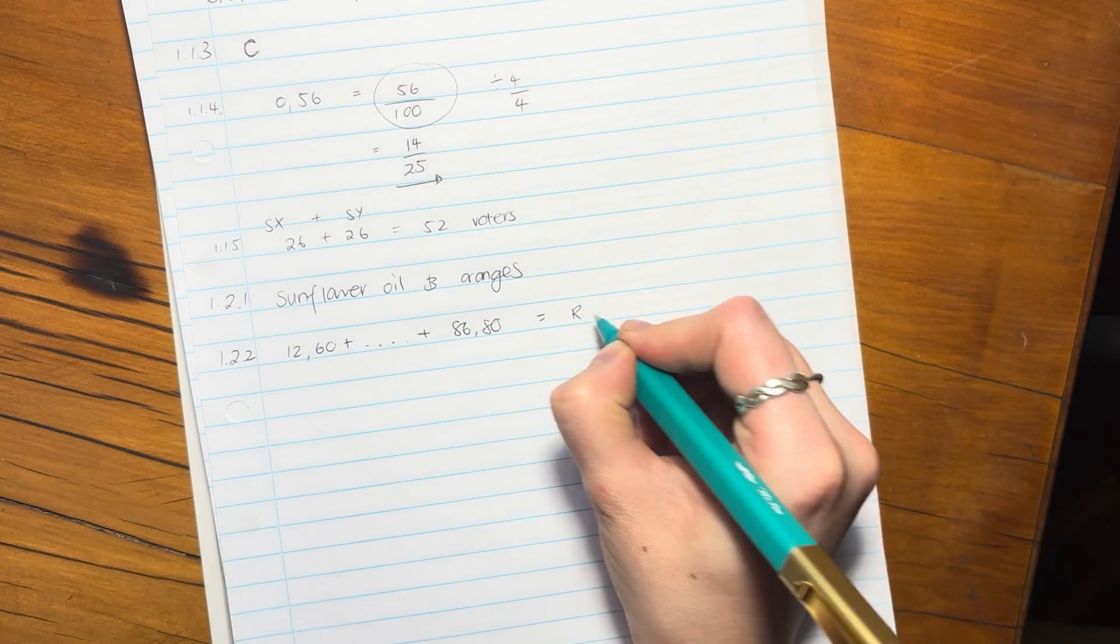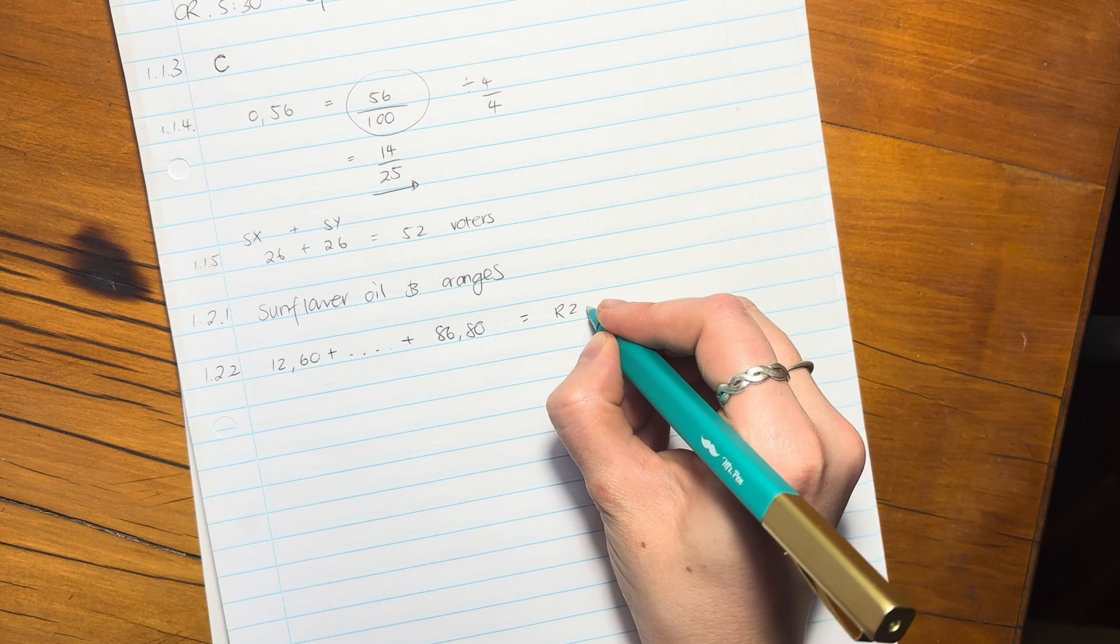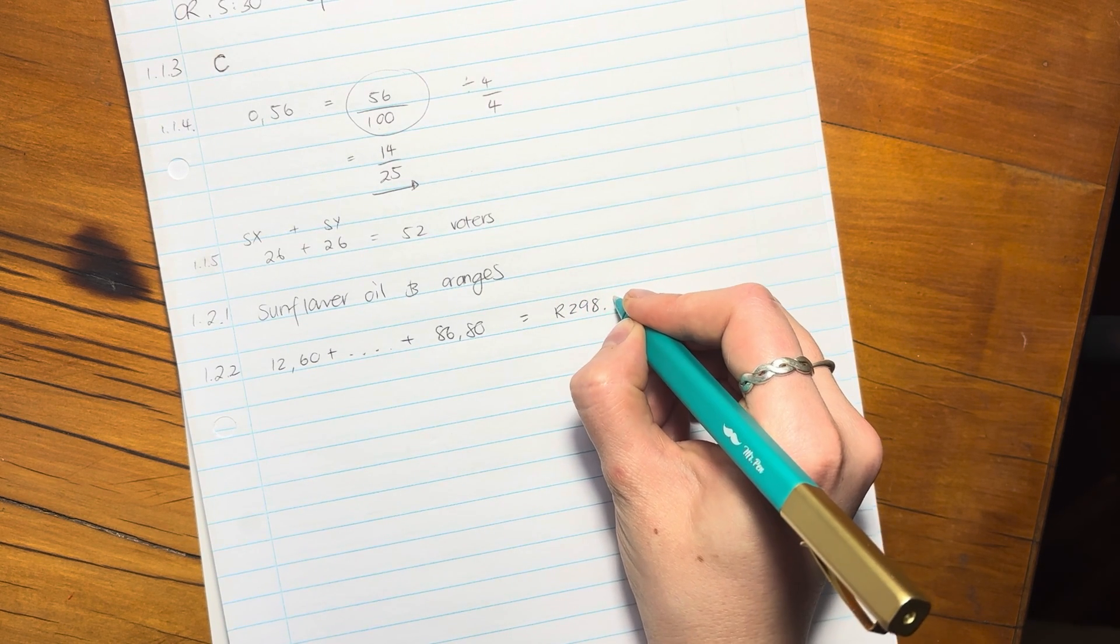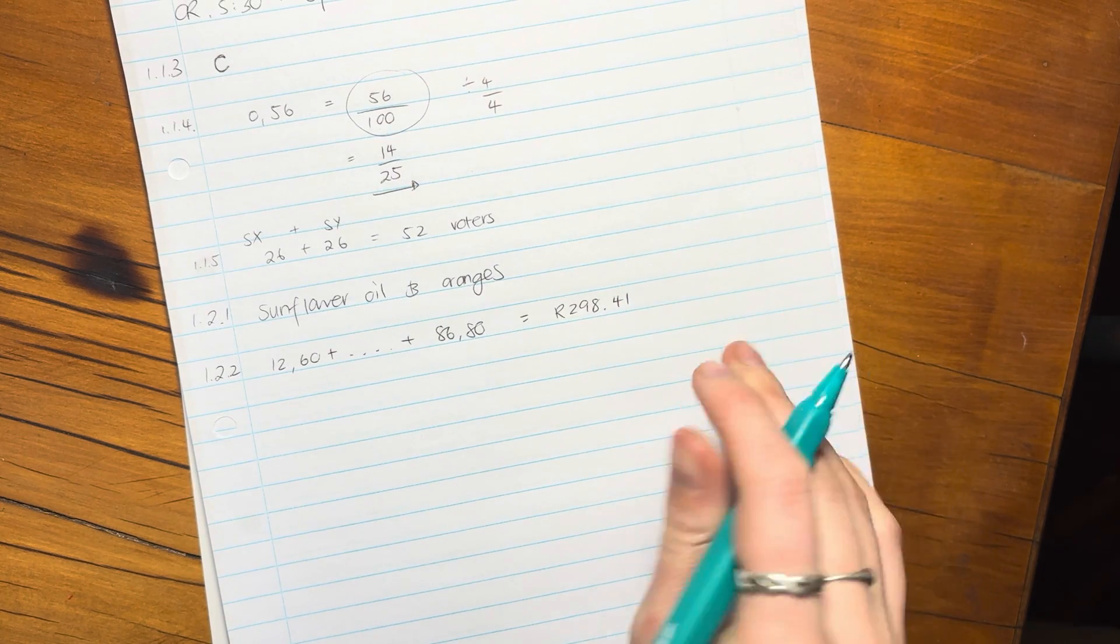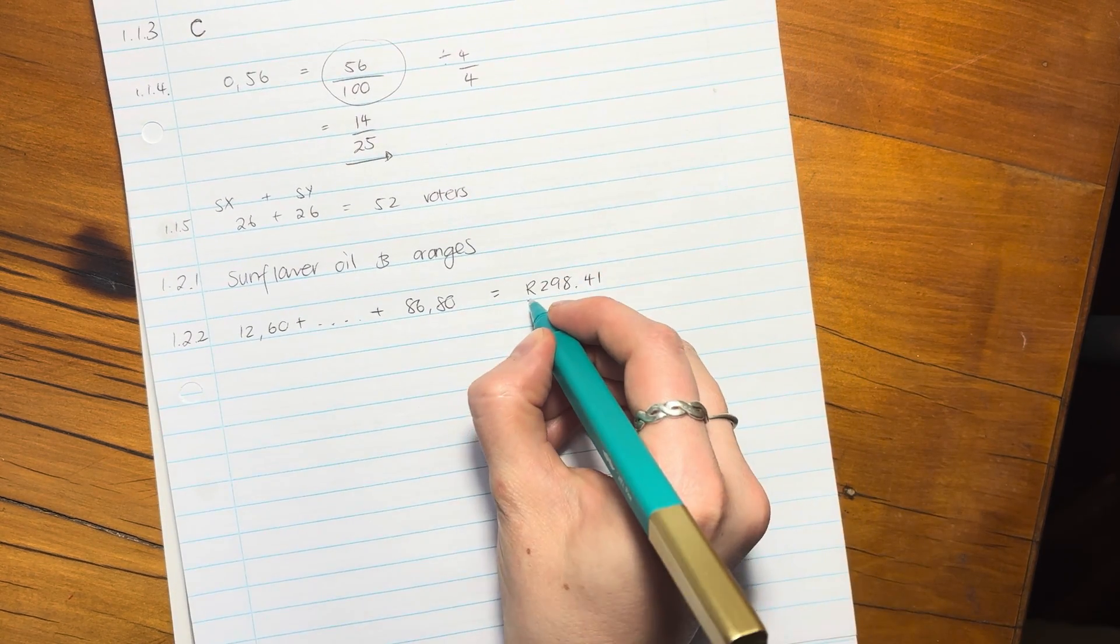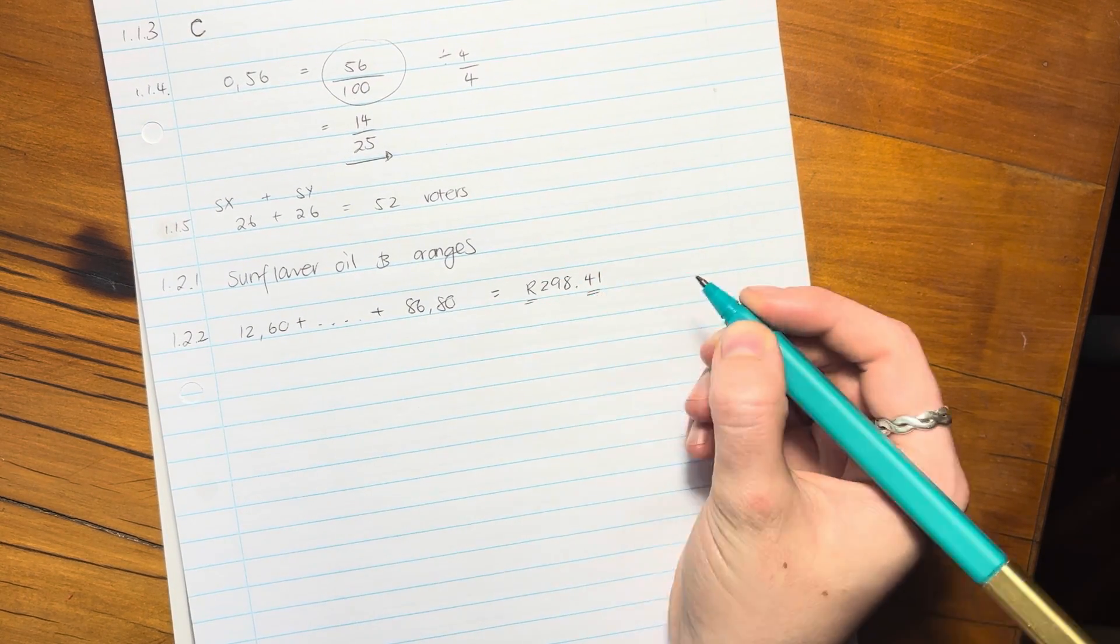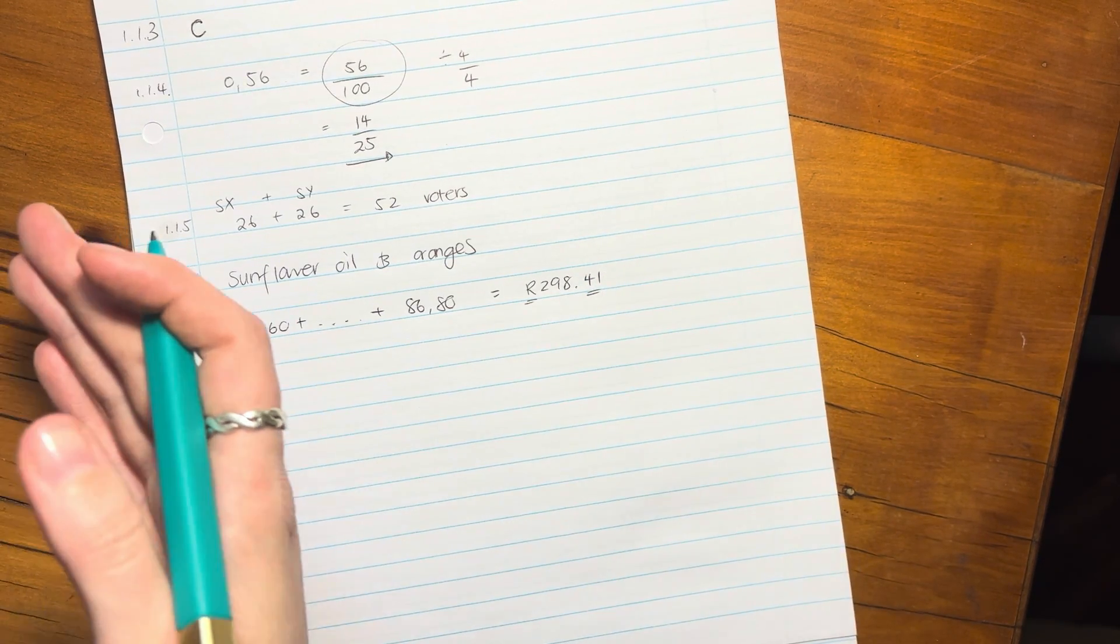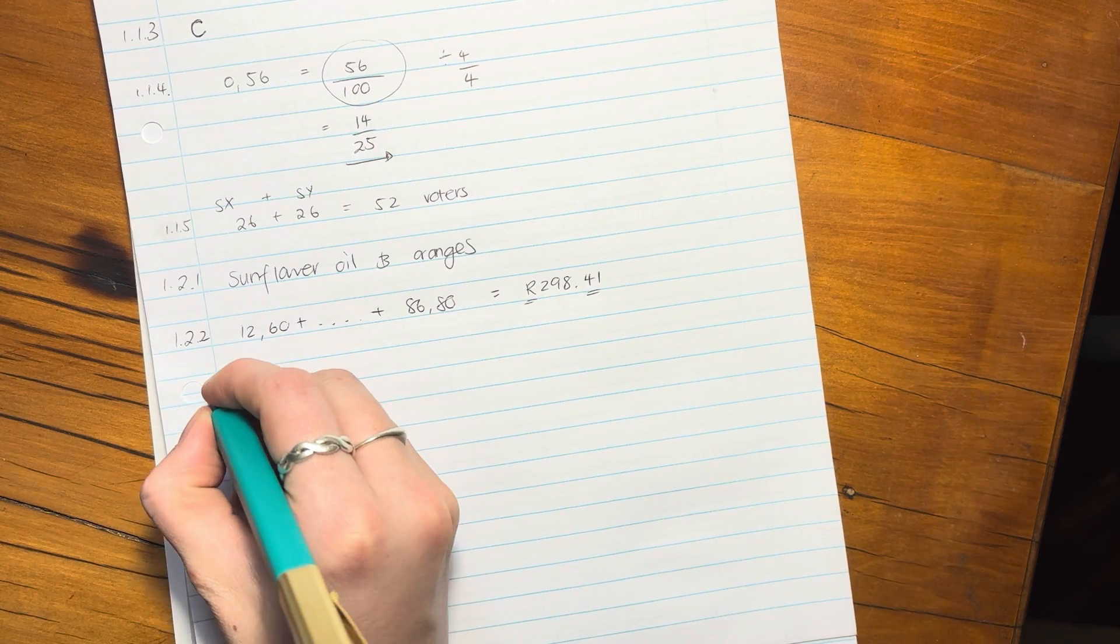Write all the 2.60 plus all the way to 86.80 because you have to show some working out. And then you write your answer with a rand value because it's not just 298 nothings. It's 298 rand and 41 cents. Always remember your rand. And remember also with monetary amounts, you always have to round off to two decimal places.